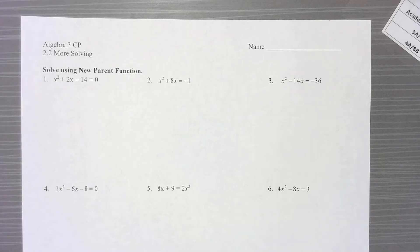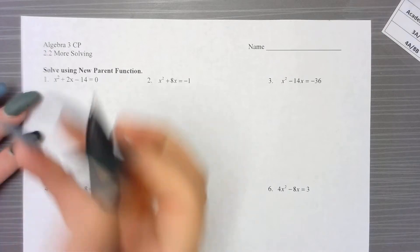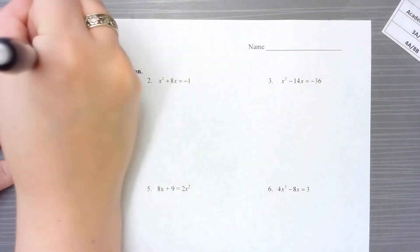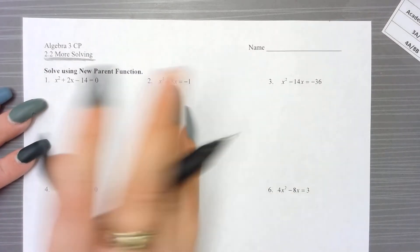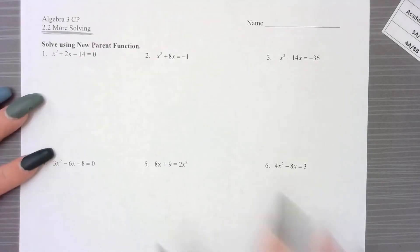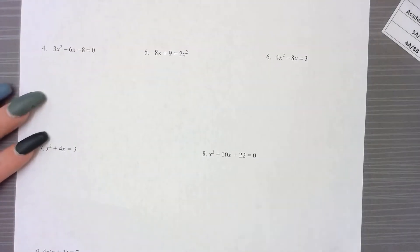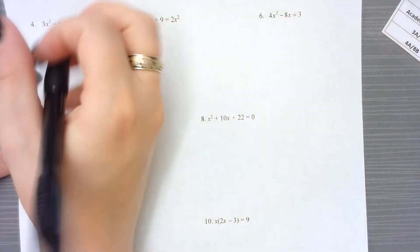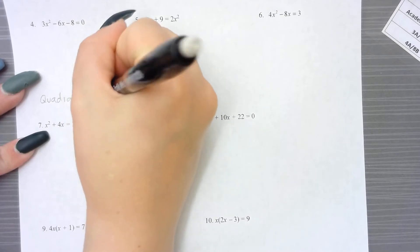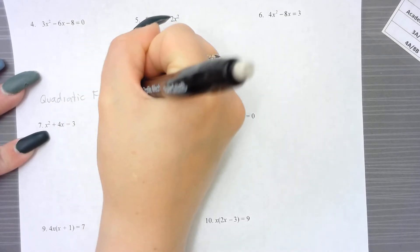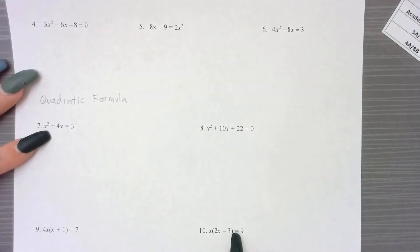Hello everyone. Welcome to today's lesson. Today we are going to be doing quadratic formula and the discriminant. We need to go backwards — we're going back to section 2.2 more solving. Before, we only did the new parent function stuff, so you should have the first six of these already completed. We are going to jump down to where it says quadratic formula and start solving using that formula.